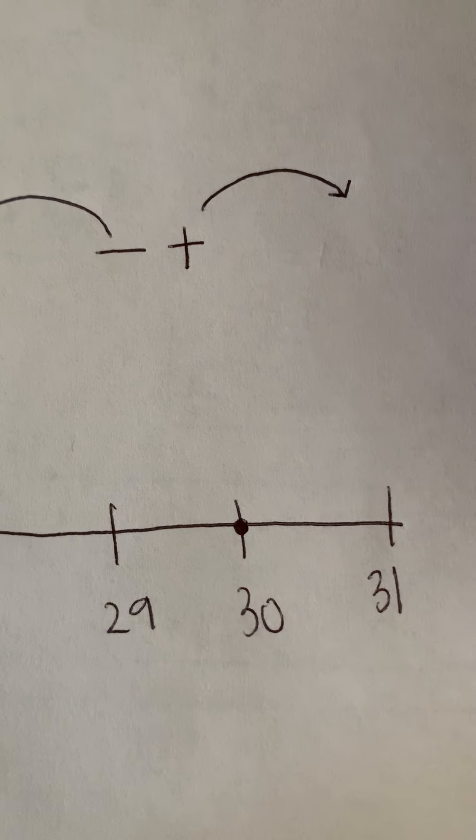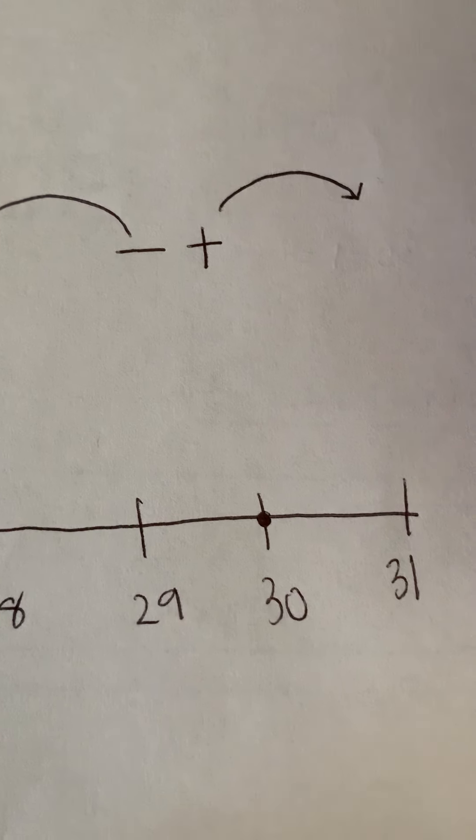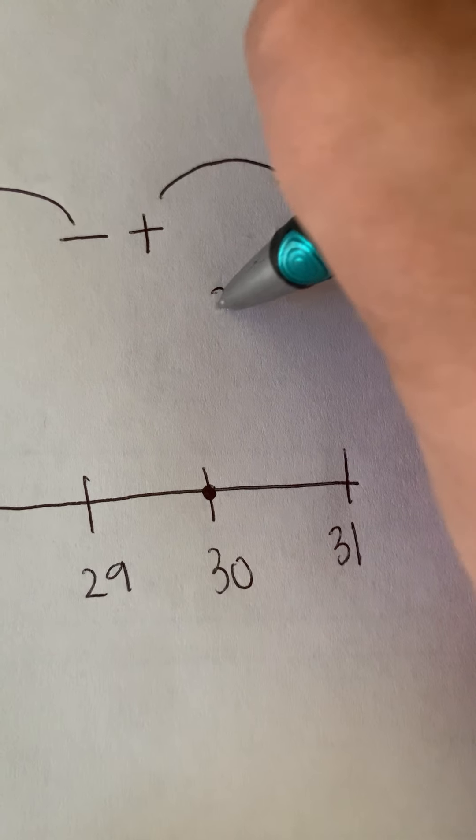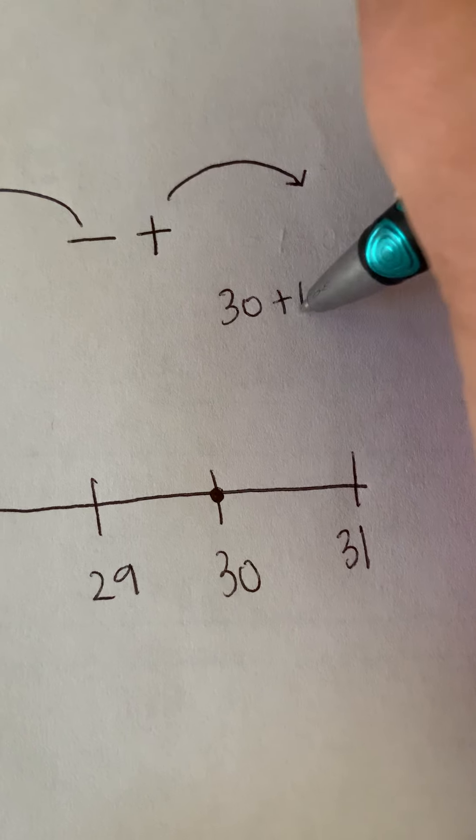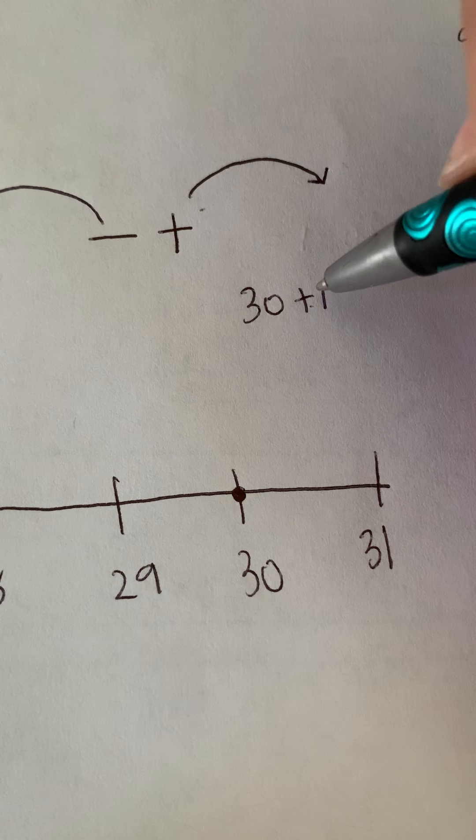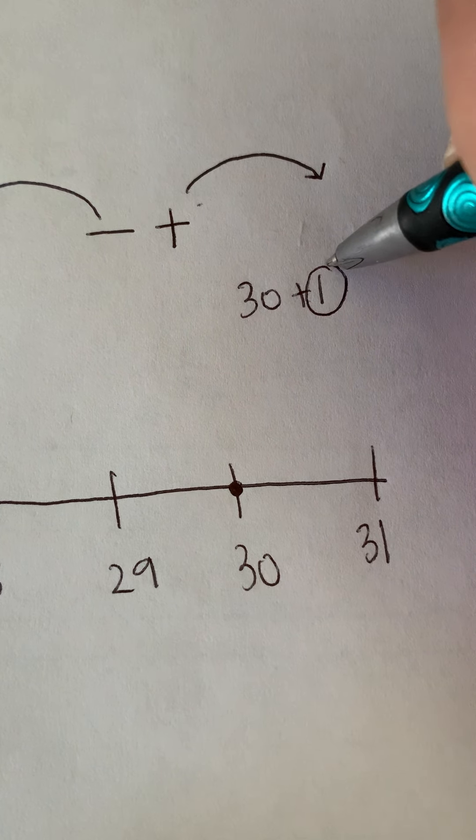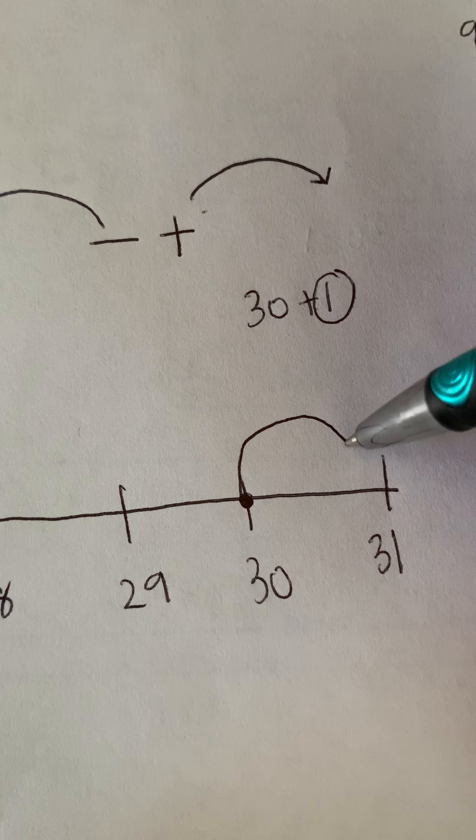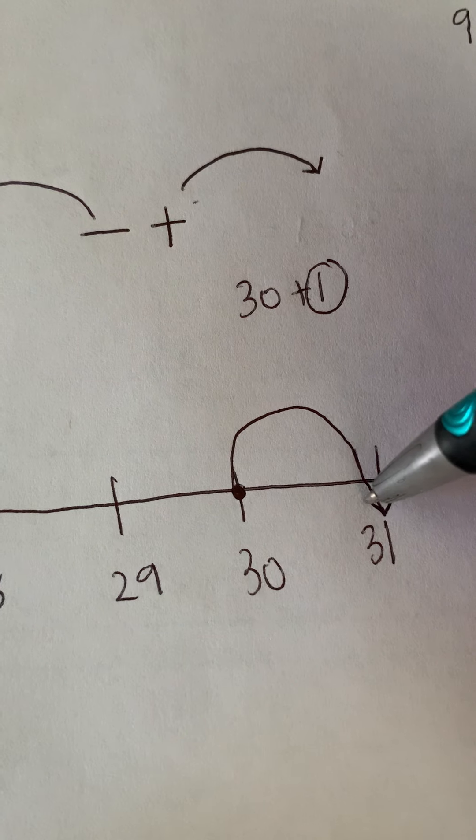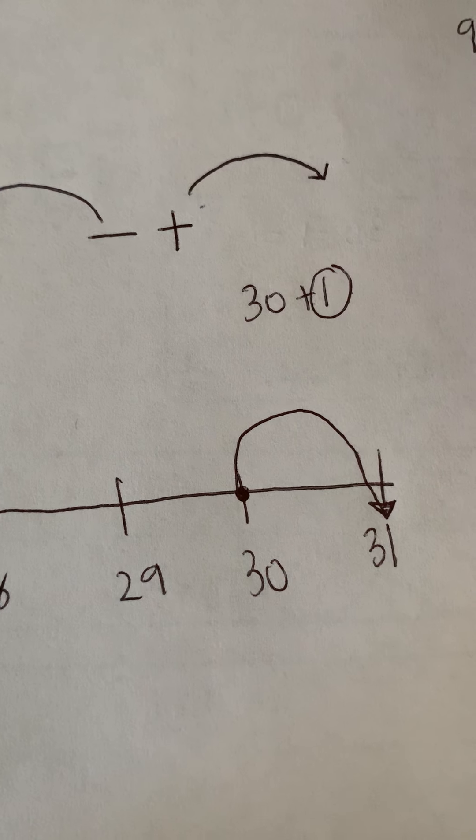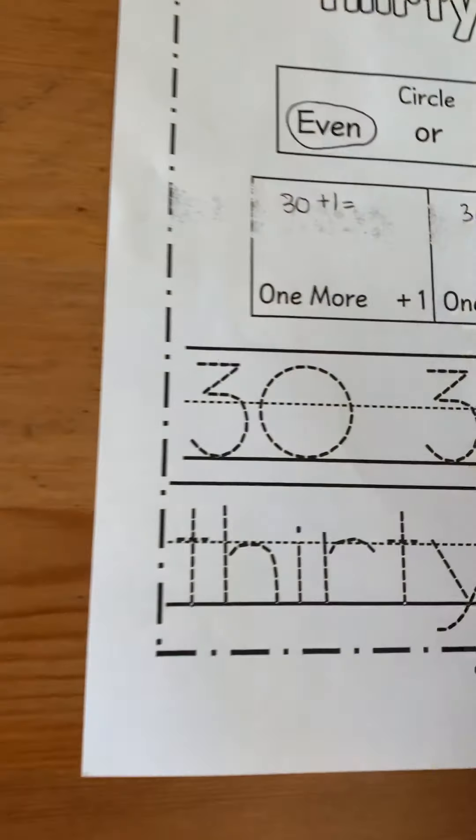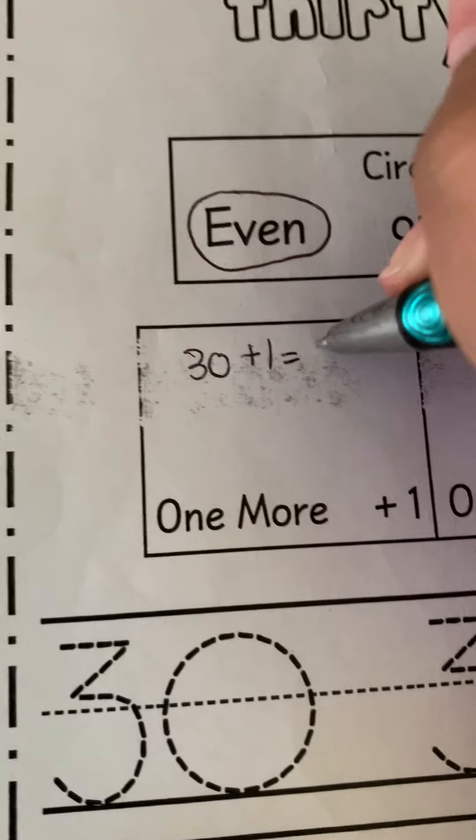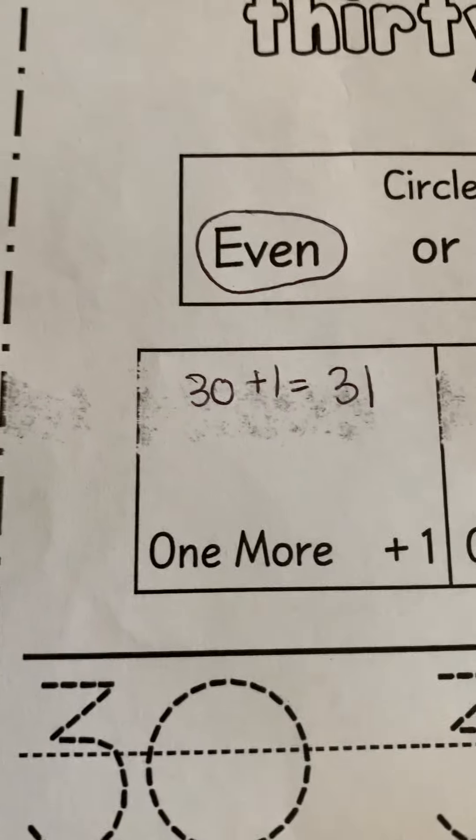I'm adding. And depending on what that number is, our equation is 30 plus 1. So I'm jumping forward. And it's telling me I have to jump forward one time. So I'm going to go from my 30 and I'm going to jump one time to my 31. So then your job is to write 31 in that first box.